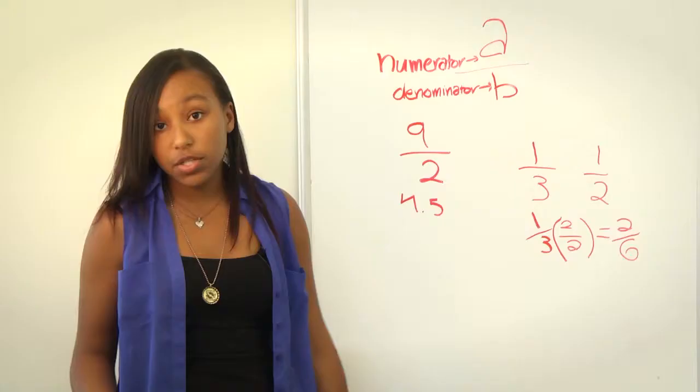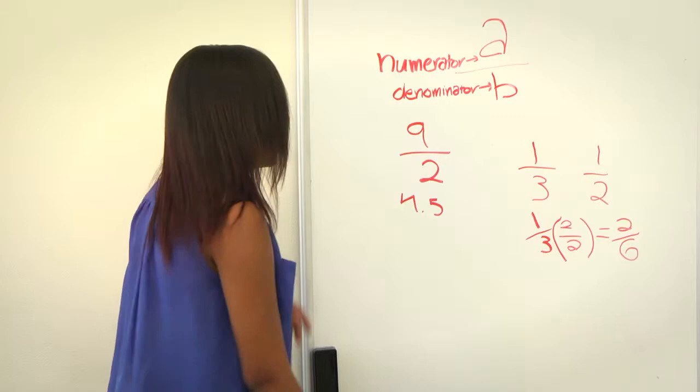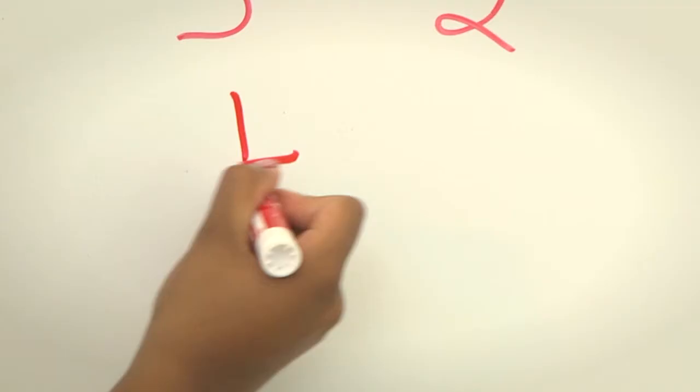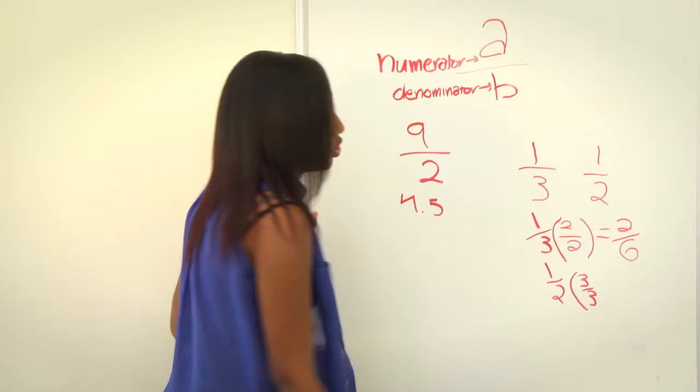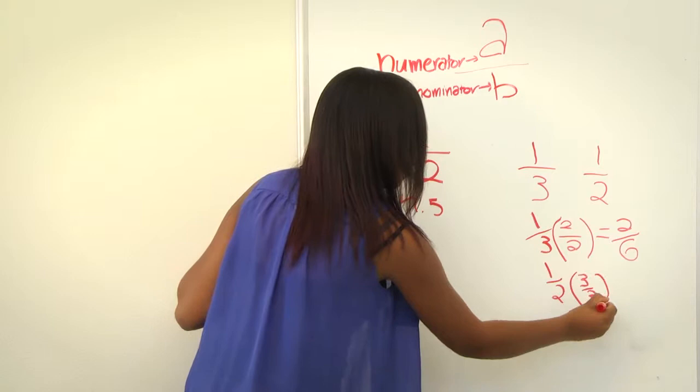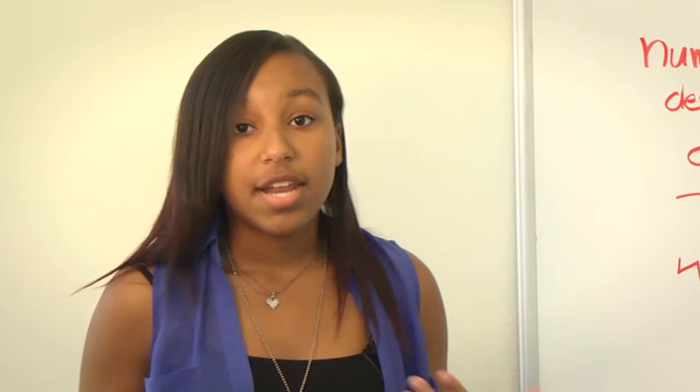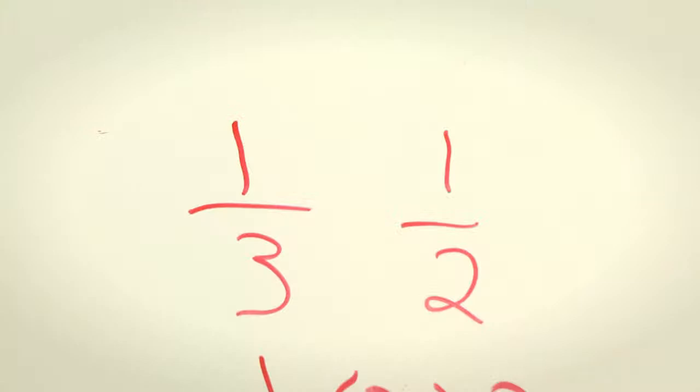Which will get us to 2 over 6. You also have to do the same thing with 1 half. So it would be 1 over 2 times 3 over 3, since we're still trying to get to that least common denominator, to get to 3 over 6. Now that the denominators are the same, we can compare the numerators. Since 2 is less than 3, we know that 1 third is less than 1 half.